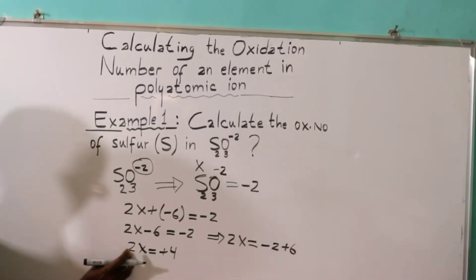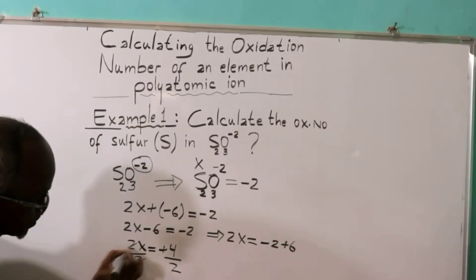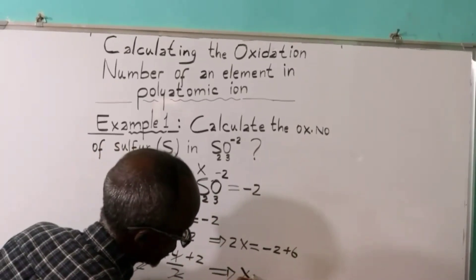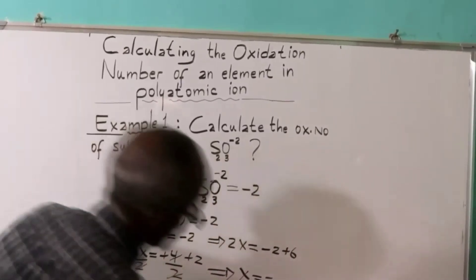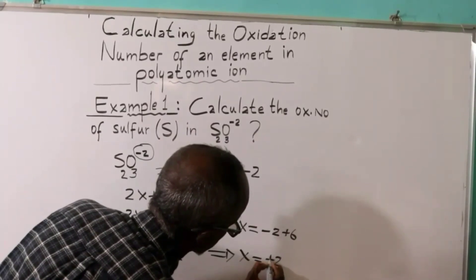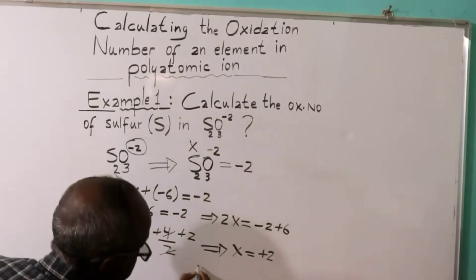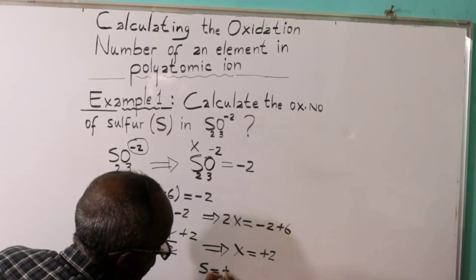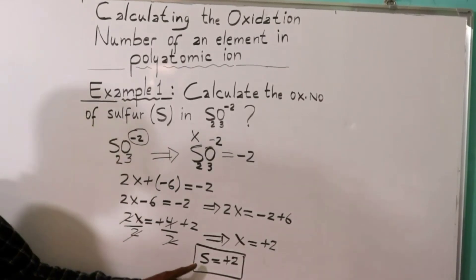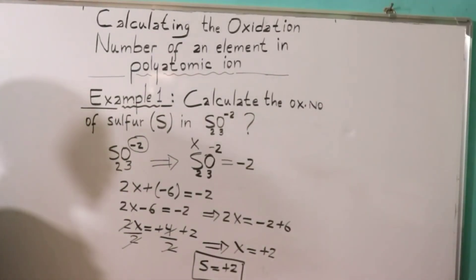X is equal to plus two. The oxidation number of sulfur is plus two. Example complete.